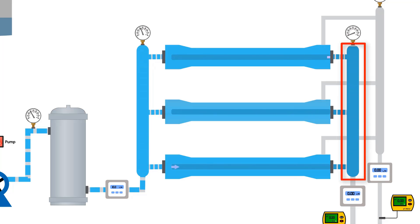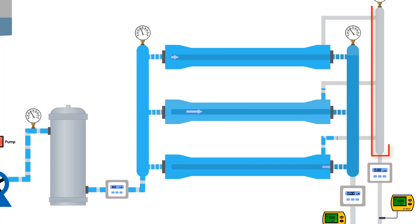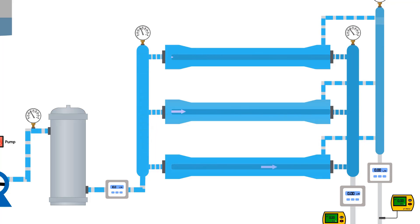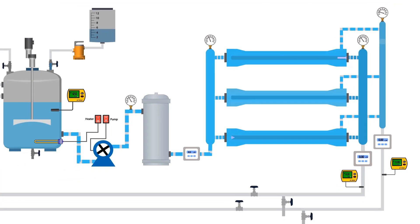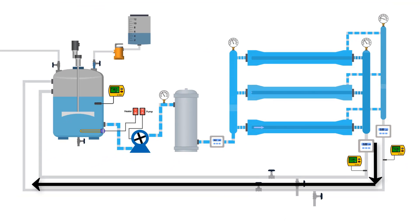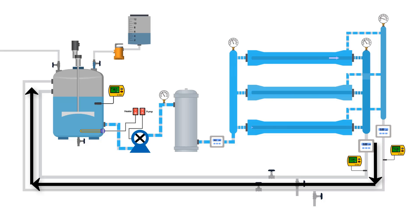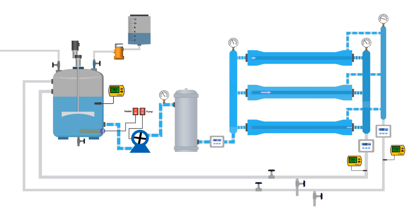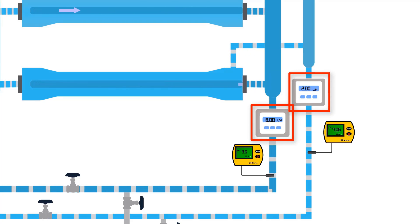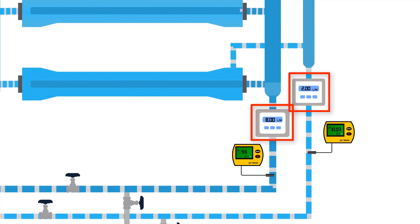Permeate goes to the permeate header, while reject goes to the reject header. Both headers are connected to the mixer tank, meaning they continuously feed the solution back to the mixer tank. The flow meters show the permeate and reject flow rates respectively.